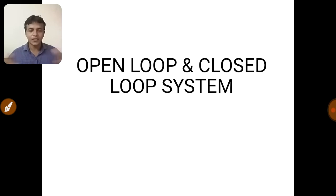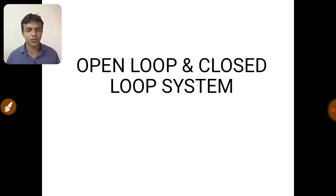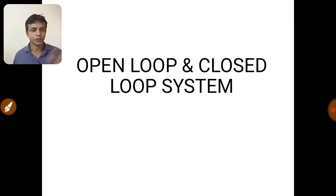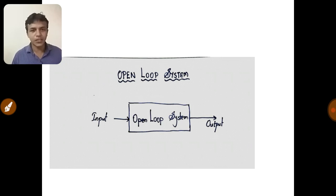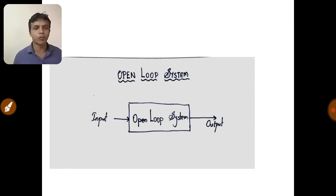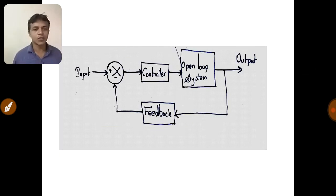Now let us talk about the types — open loop system and closed loop system. A control system can be divided into these two types. In an open loop system, we give the input to the system and we get the output. The output can be changed simply by varying the input. That is open loop system.